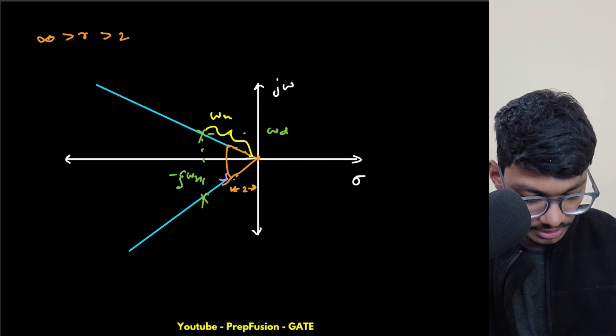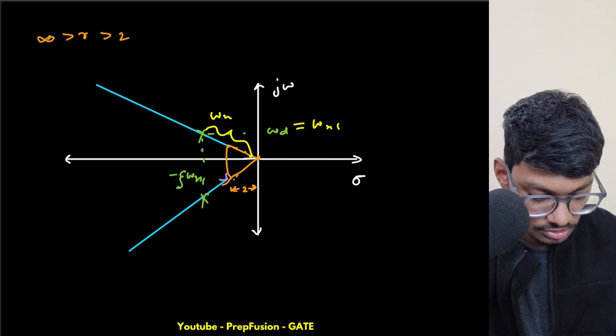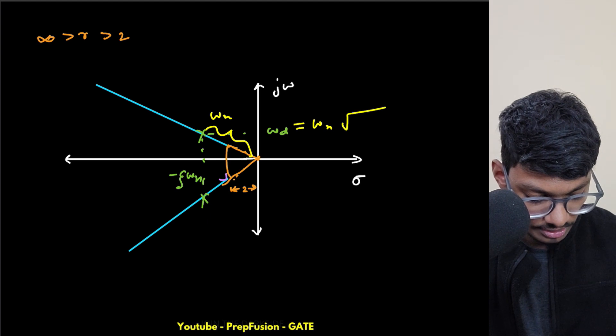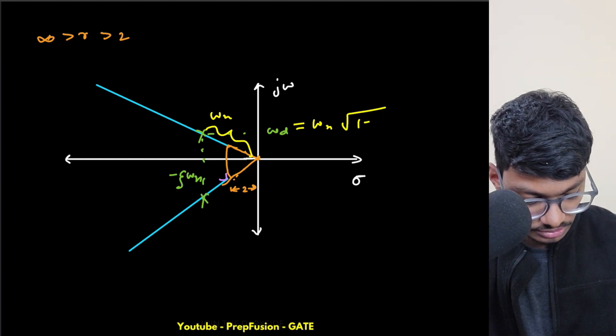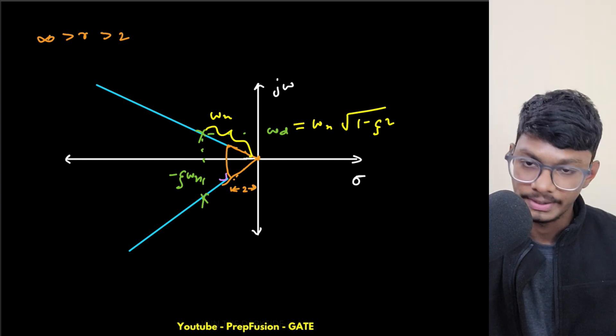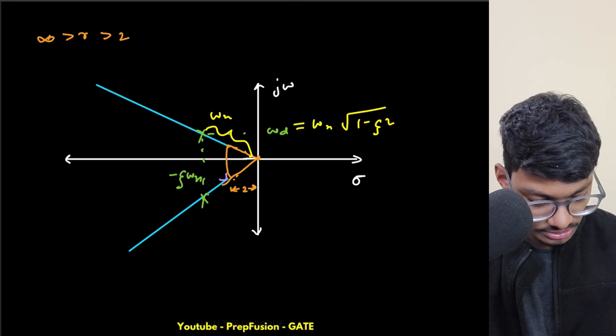Now if you recall correctly, this distance from the origin equals omega n itself. Or if you want to prove it, what is this omega d equals to? Omega d equals to omega n times the square root of one minus zeta squared. Now simple Pythagoras theorem: apply omega d squared plus zeta omega n squared.